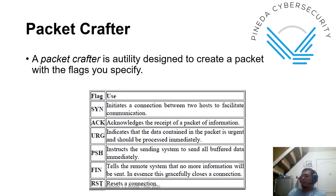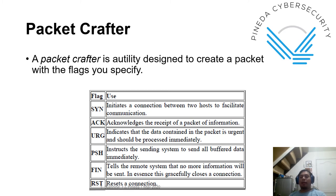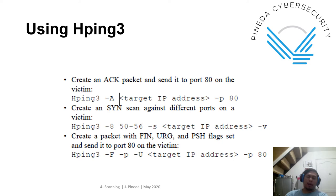Each TCP flag has a specific expected response from the target. For example, if you send a SYN to the target, the normal response is a SYN-ACK, and then the sender replies with ACK — that's the three-way handshake. This is one way of checking whether a target is alive, but it's very noisy. Using hping3 in CLI, to create an ACK packet to port 80: 'hping [target IP] -A -p 80.'